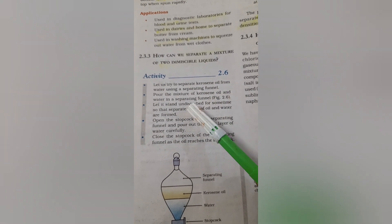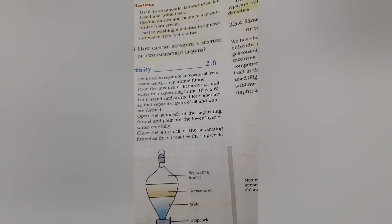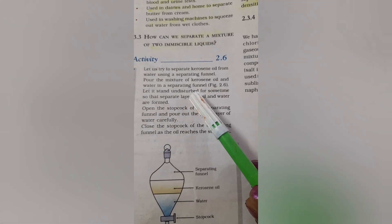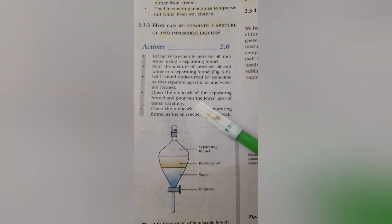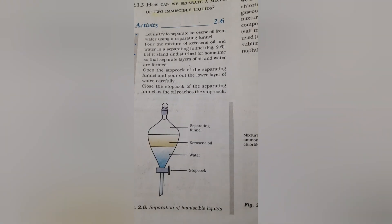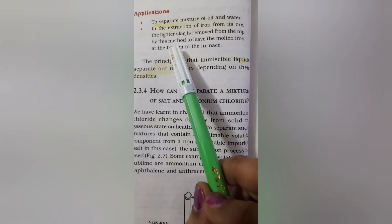How can you separate a mixture of two immiscible liquids — that is, kerosene and water? Immiscible means they do not mix together; if you put kerosene on water, kerosene spreads as a thin film on top. You pour the mixture of kerosene oil and water into a separating funnel and keep it undisturbed for some time so that separate layers form. Then you open the stopcock at the bottom and remove the water from inside.